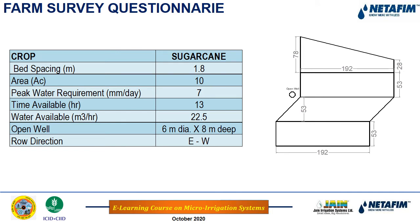For the worked example, the farm survey questionnaire shows: crop is sugarcane with bed spacing of 1.8 m, area is 10 acres, peak water requirement is 7 mm/day, time available is 13 hours, water available is 22.5 m³/hr from a well of 8 m depth, and row direction is east-west. We need to calculate the area of this farm and check whether irrigation is feasible with the available water.